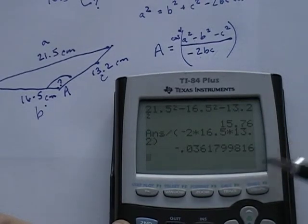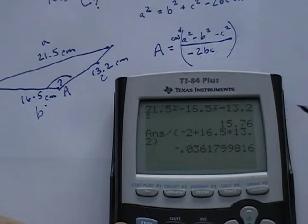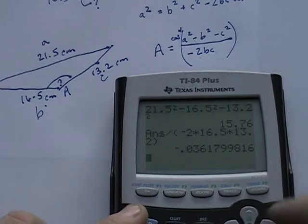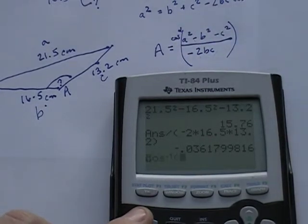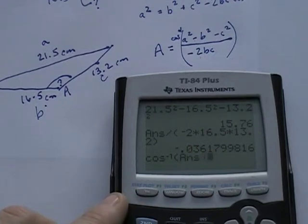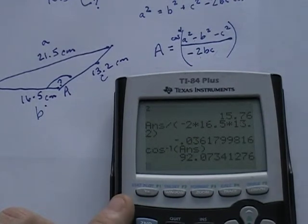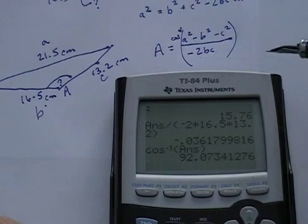And that's going to give me a decimal, specifically a negative decimal. That's okay. So then we're going to do the last step, which is the inverse cosine of this answer, hit enter, and I get 92.07.